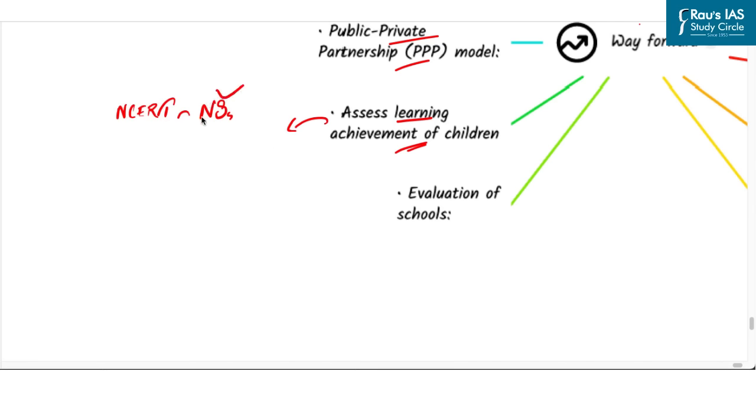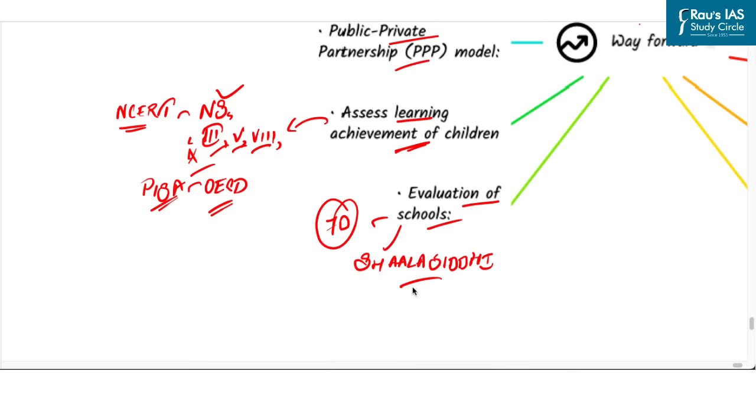The next is assess learning achievement of children. In this regard, national surveys are carried out by NCERT to assess learning achievement of children in classes 3rd, 5th, 8th and 10th. Also, Government of India has decided to participate in programs for international students' assessment that is PISA to be conducted by the OECD. Next suggestion is evaluation of schools. In order to objectively evaluate the performance of the school education system in the state, Ministry of Human Resources Development has designed 70 indicators based metrics to grade the states or UTs. Another initiative in this regard is Shaala Siddhi and it is a school standards and evaluation framework developed by National Institute of Educational Planning and Administration, which enables the school to self-evaluate based on 7 key domains.